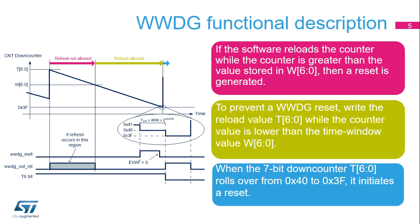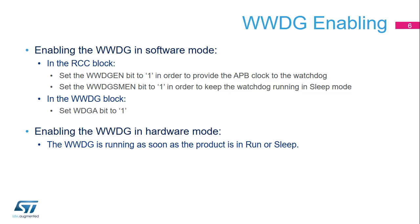To prevent a window watchdog reset, the watchdog refresh must happen while the down-counter value is lower than the window value and greater than 0x3F. This is illustrated by the green area. The refresh operation consists of reloading the down-counter with bits T[6:0]. The WWDG can work either in hardware or software mode. In software mode, the application needs to enable the APB1 watchdog clocks via the RCC and set the bit WDGA to 1 in the WWDG in order to enable the watchdog.